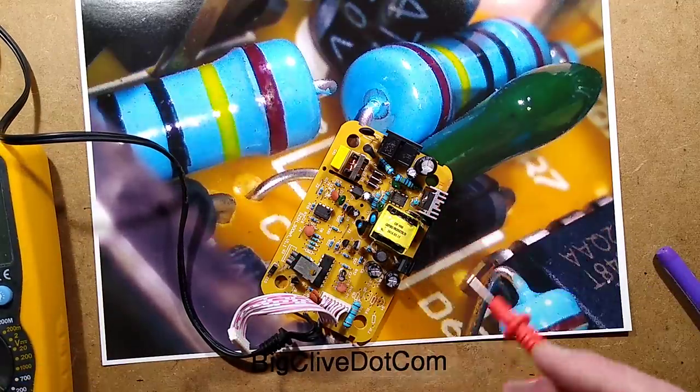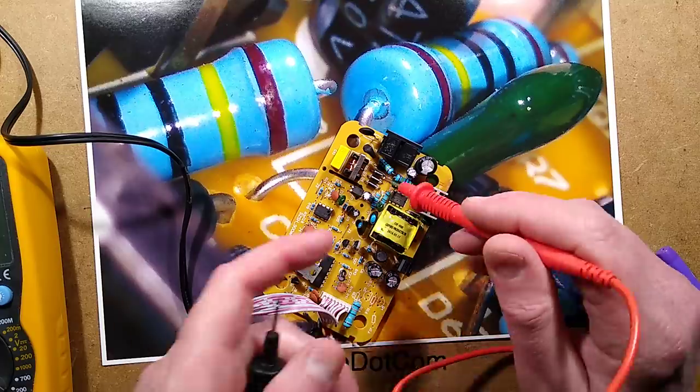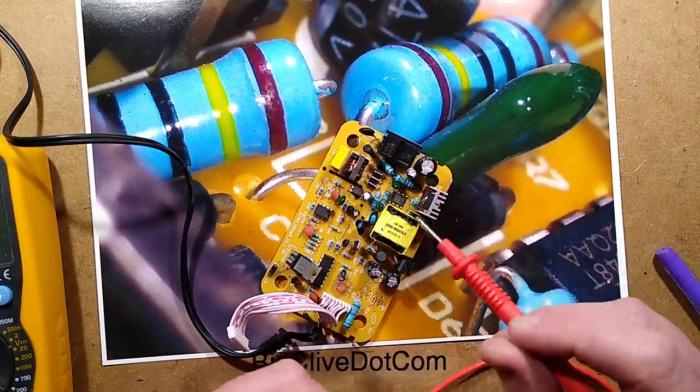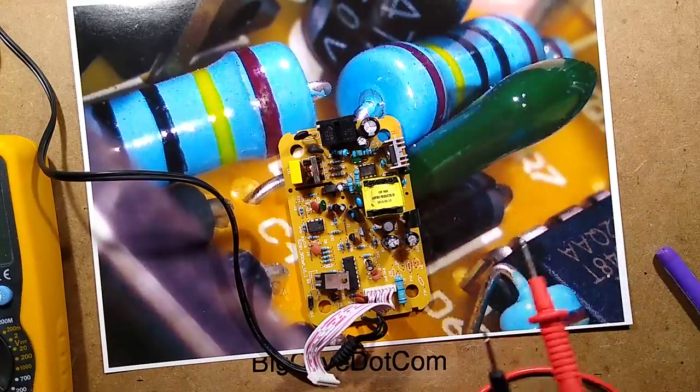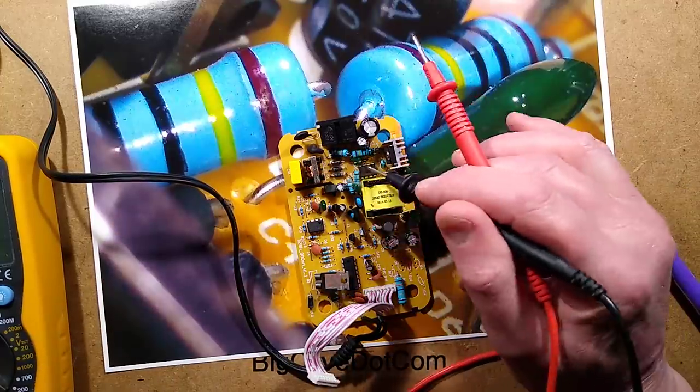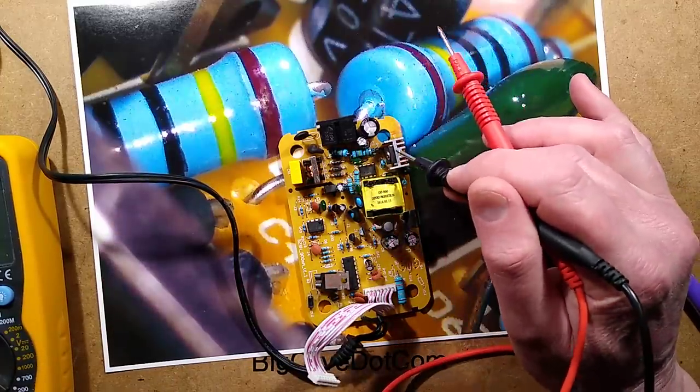So that's a common failure thing. I mean, that has seen a lot of current, because it's blowing the fuse here. So I wonder if it's just been a brief short, and that fuse has done its job and protected part of the circuitry. It's certainly not protected the transistor.